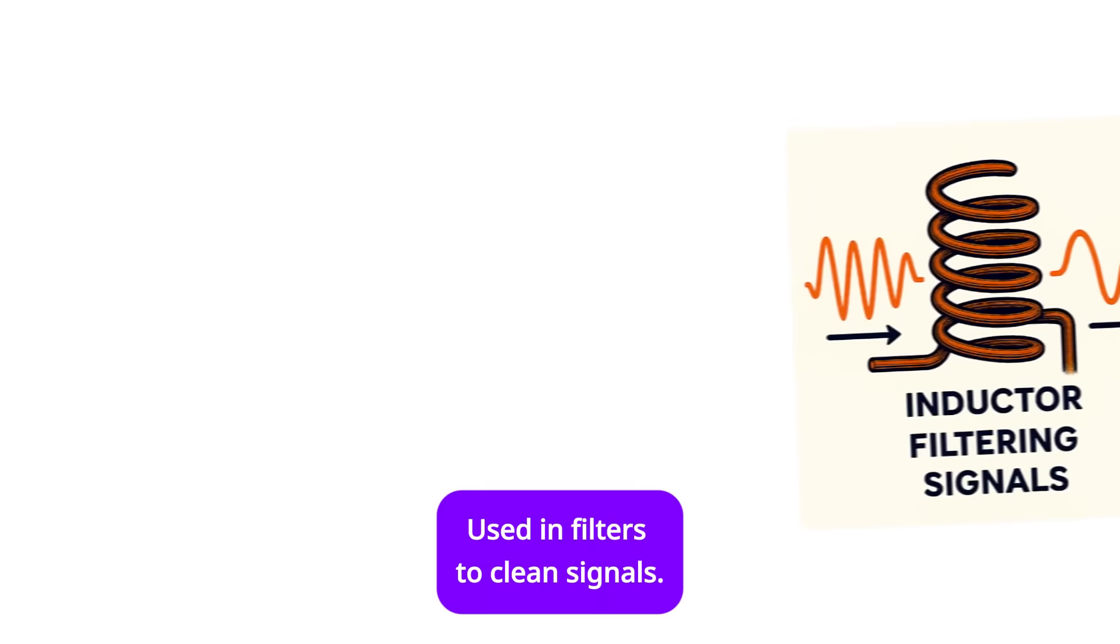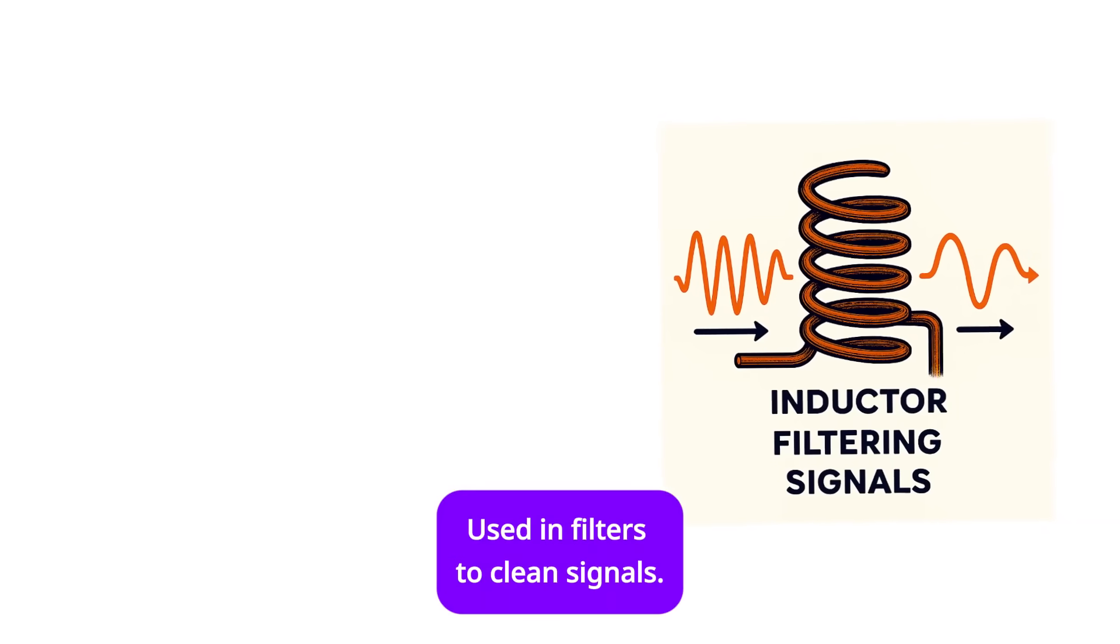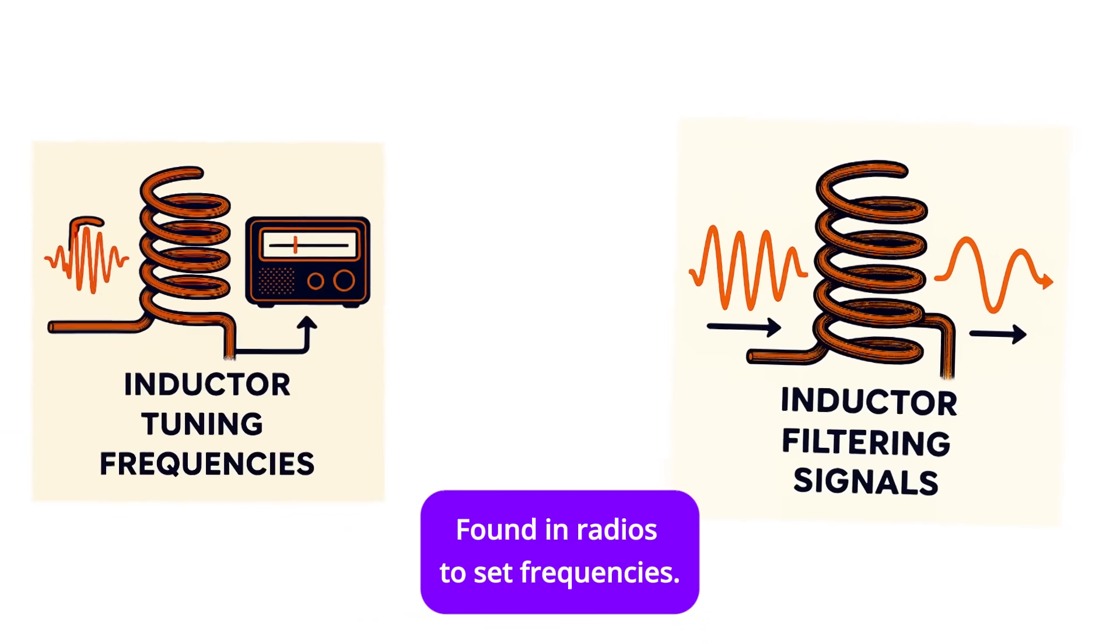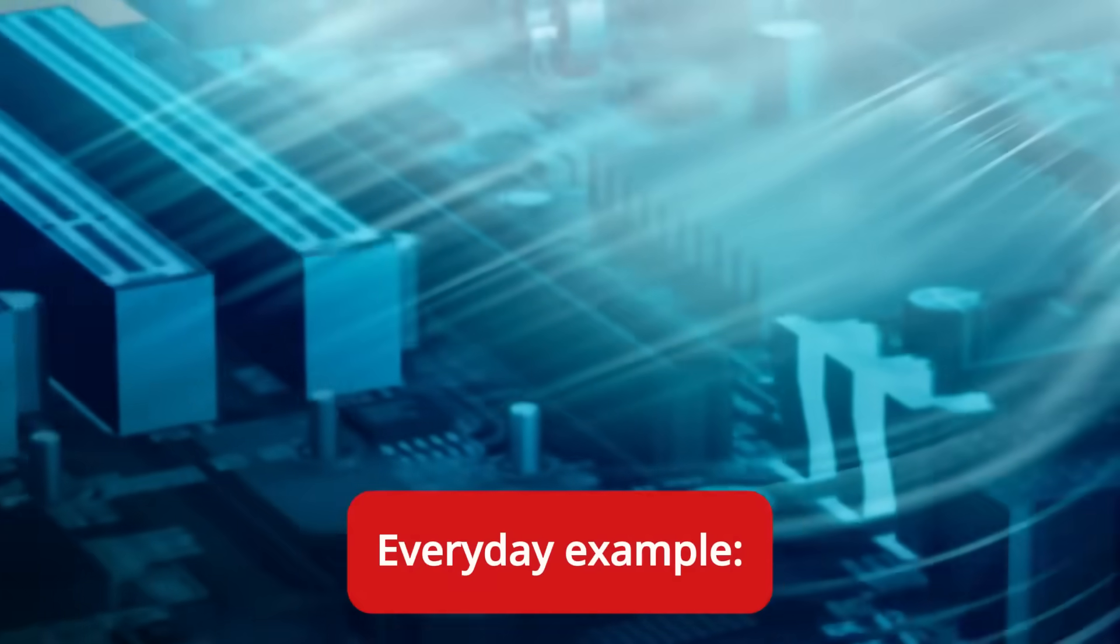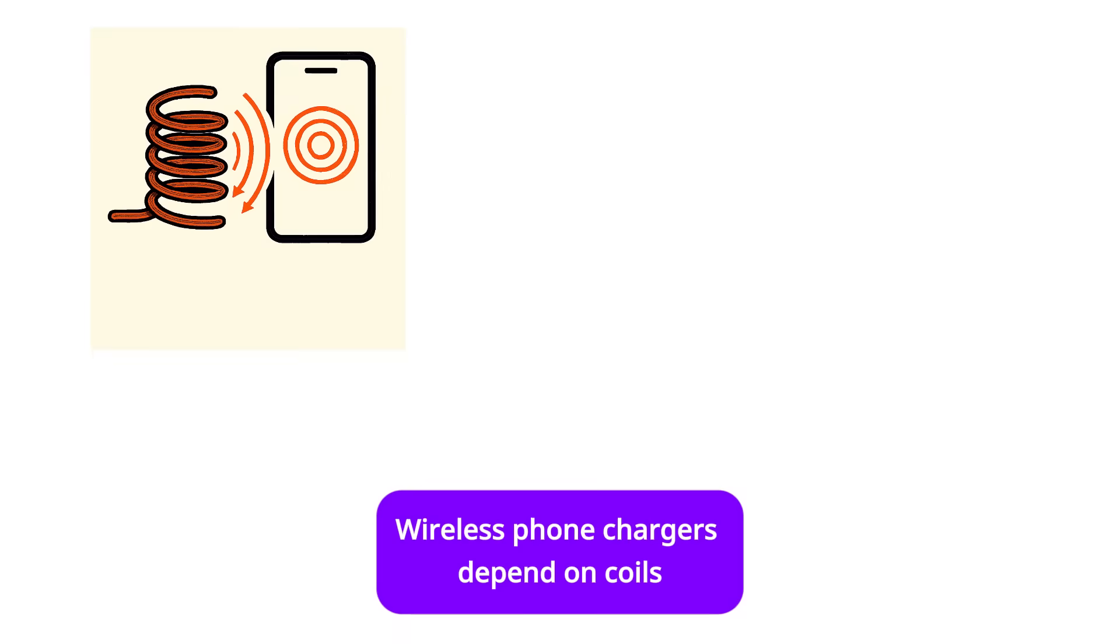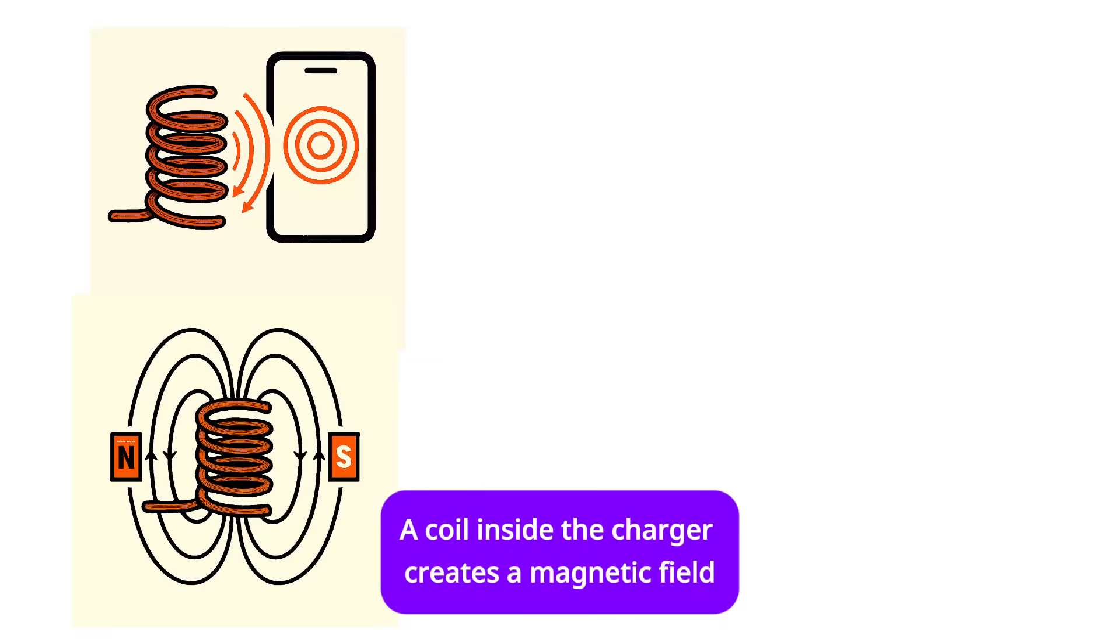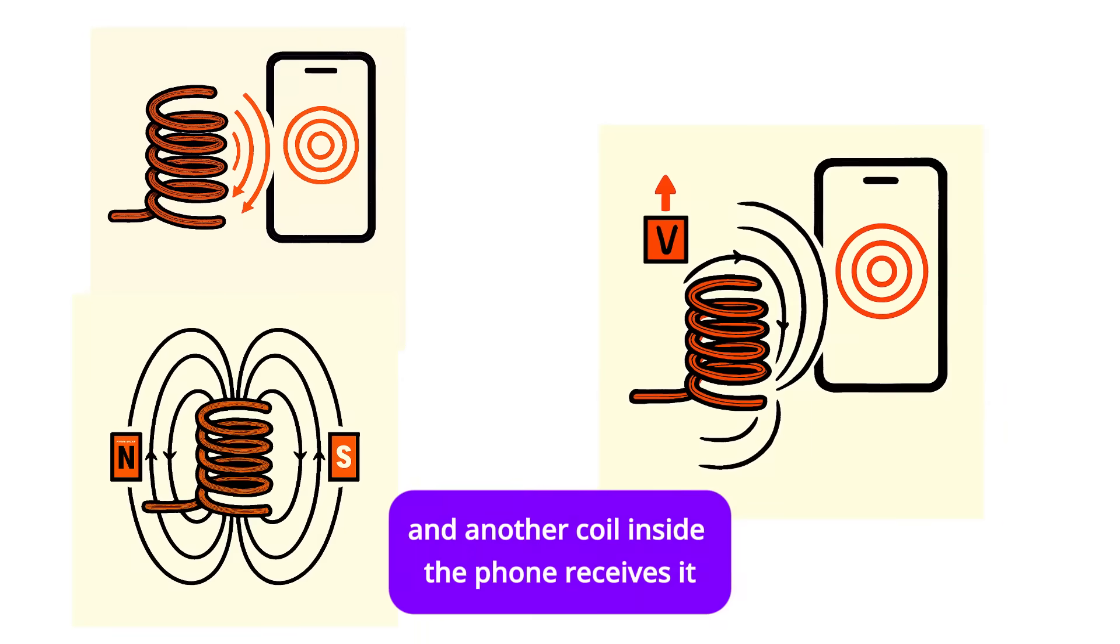Functions: used in filters to clean signals, found in radios to set frequencies. Everyday example: wireless phone chargers depend on coils. A coil inside the charger creates a magnetic field, and another coil inside the phone receives it and turns it back into electricity.